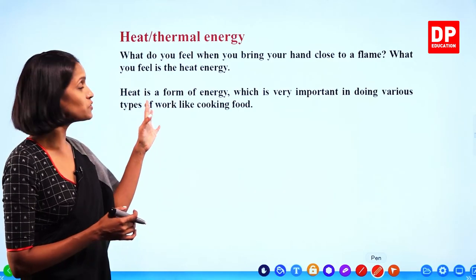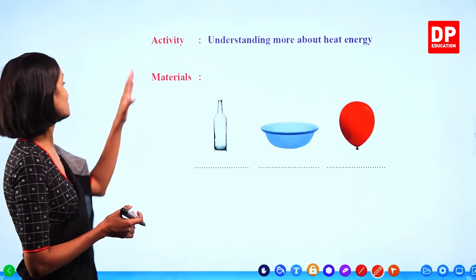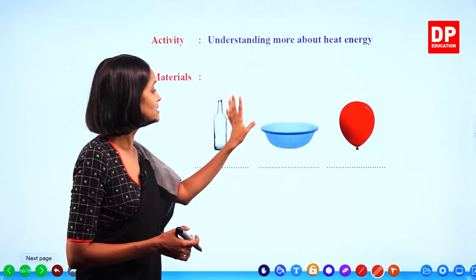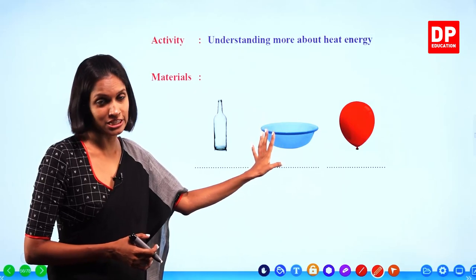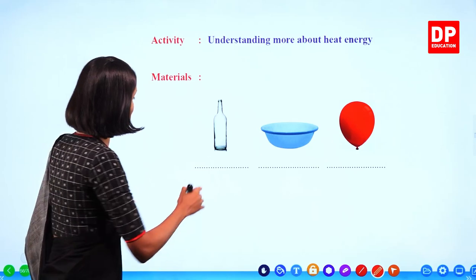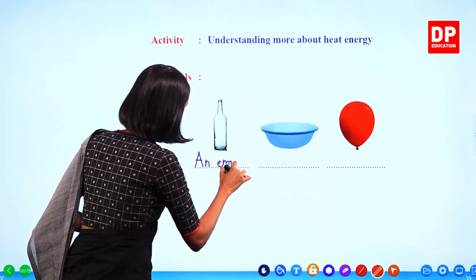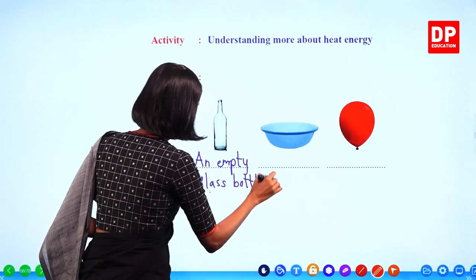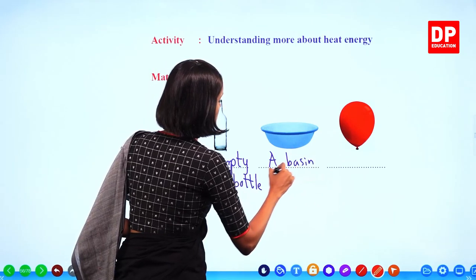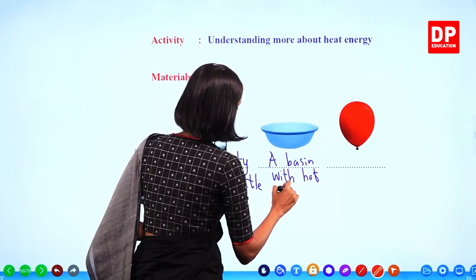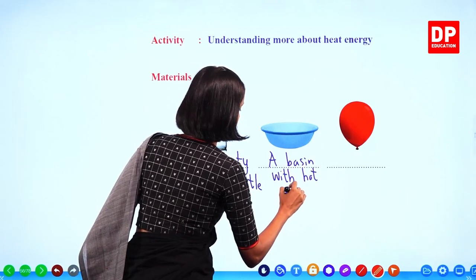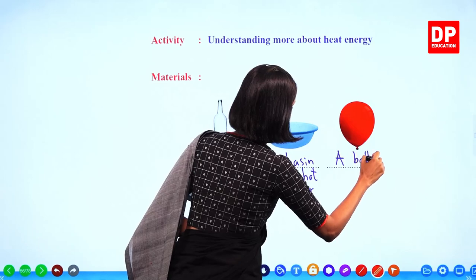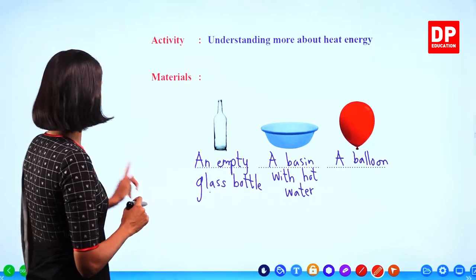We have an activity to do — understanding more about heat energy. To do this activity, we need an empty glass bottle, a basin with hot water (in the lab I am going to use a beaker), and a balloon.